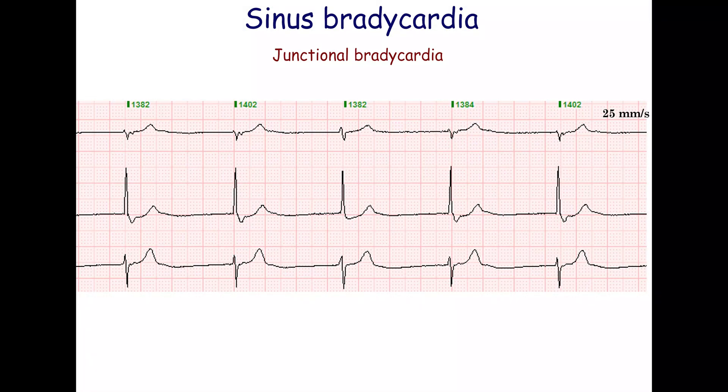In a junctional rhythm, the P-wave is always inverted in the inferior leads. This ECG shows a junctional escape rhythm. The heart rate is 43 beats per minute.